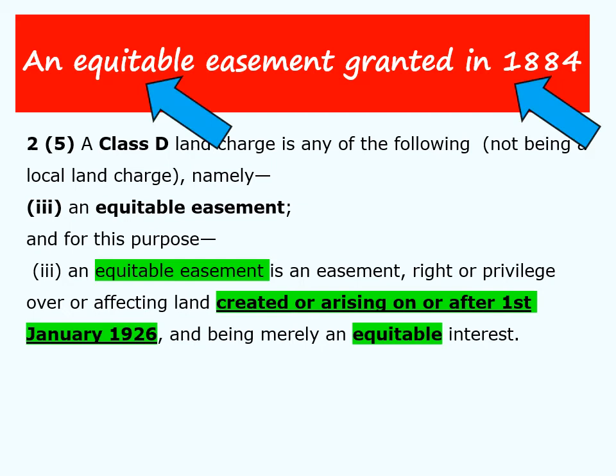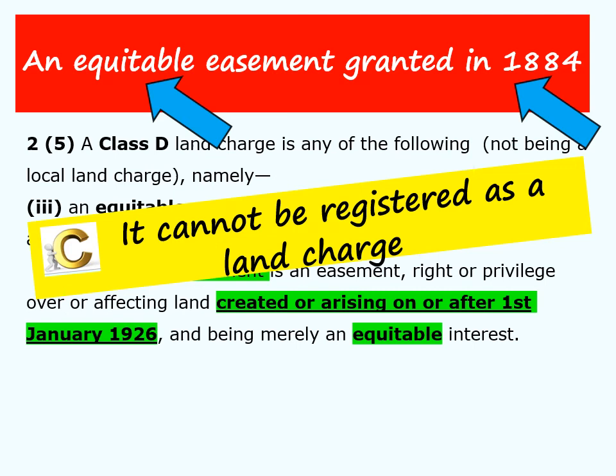The next example is still an equitable easement, but this time it was granted in 1884. Applying the same rule: the facts state it is equitable, but it was not granted after 1925. We can conclude that it does not fall within the land charges system.